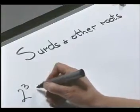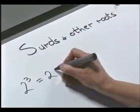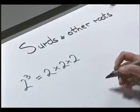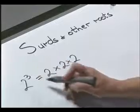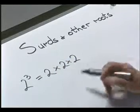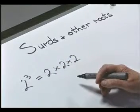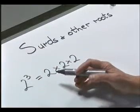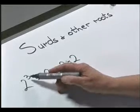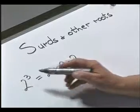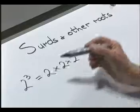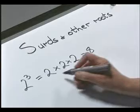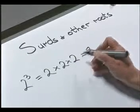2 cubed is written as 2 multiplied by 2 multiplied by 2. It's a neat way of writing this repeated multiplication. We say that 3 is the power, or index, and 2 is raised to that power, or index. The value of 2 cubed works out to be 8, because it's 2 times 2 times 2.